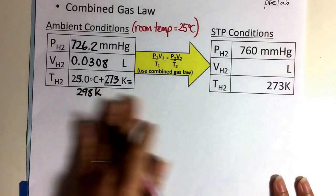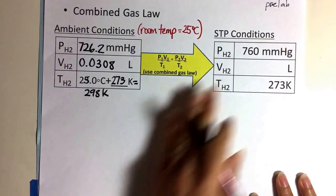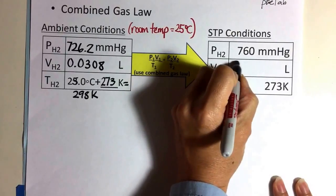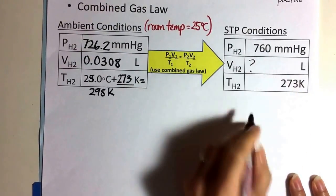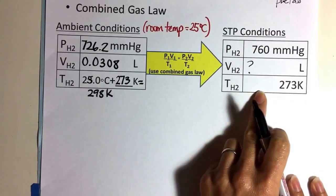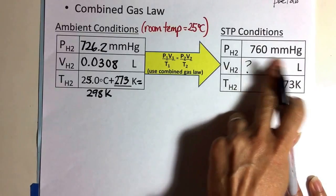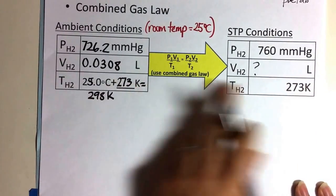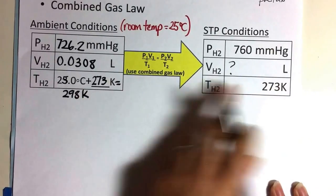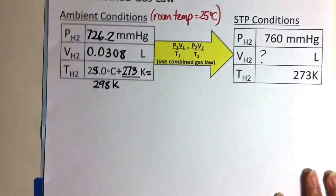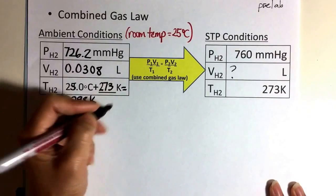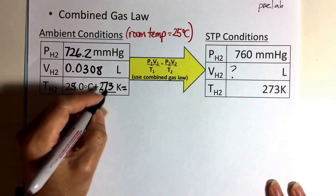Now I want to find the volume at, so this is my question mark, at STP conditions. And STP conditions is when pressure is 760 millimeters of mercury and temperature is 273. And I want to make sure I match up my units. Kelvin, Kelvin, millimeters of mercury, millimeters of mercury, and liters, liters. So I'm going to use the combined gas law to figure this out.